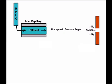Flowing counter to the direction that the ions travel is a counterflow of a heated drying gas, and this is typically nitrogen. With this nitrogen drying gas, along with a nitrogen nebulizing gas — which may or may not be present depending upon the design of the electrospray interface — and the atmospheric gases already present in the atmospheric pressure region, this is largely nitrogen. Most of the oxygen and other gases have been displaced by the use of nitrogen.